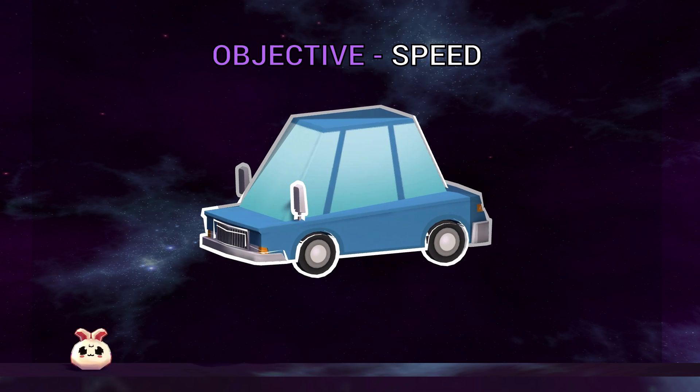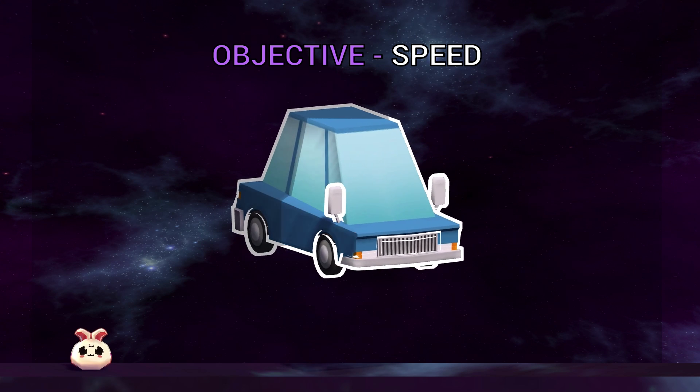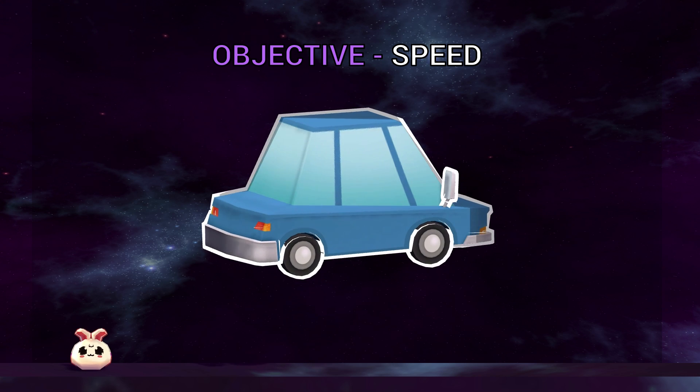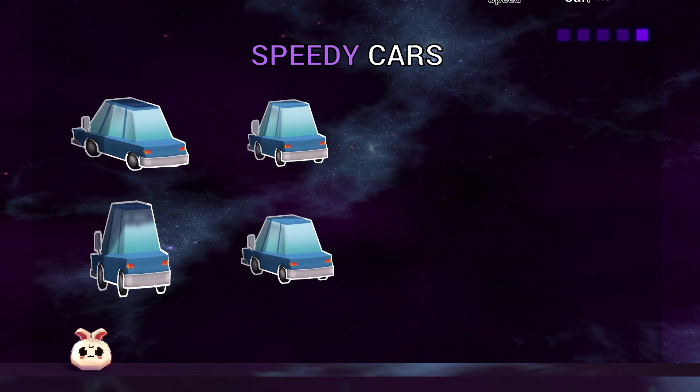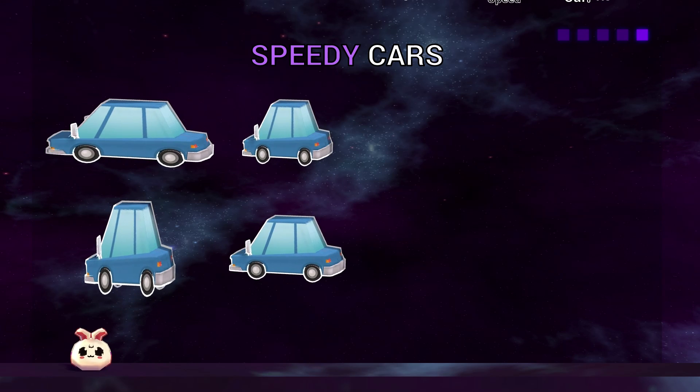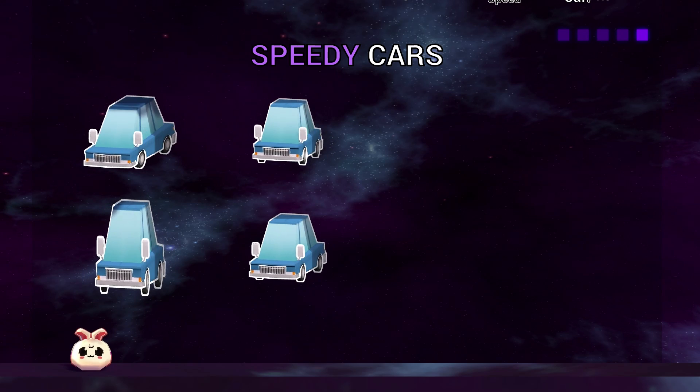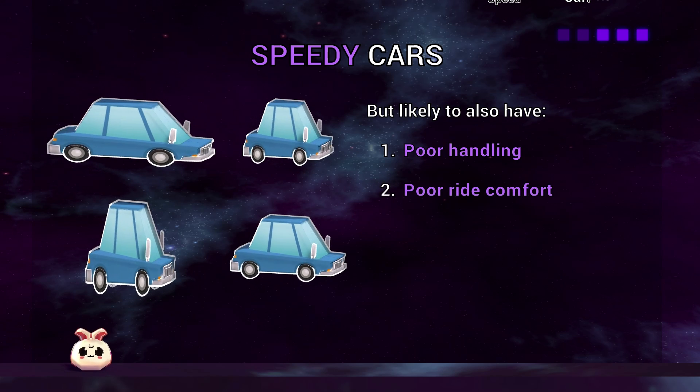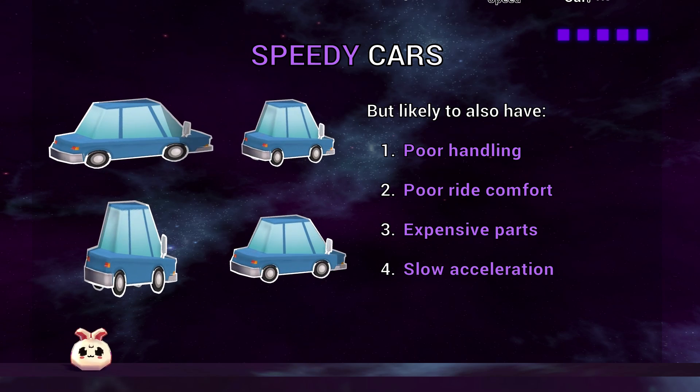Let's say we've been asked to optimize the design of a car. The competing car on the market is currently more attractive because it's faster, so we decide to optimize the car design with the single objective of improving its speed. At the end of this optimization process, we may end up with one or many solutions which are all very fast. But what have we sacrificed? Without considering other objectives during the optimization process, we have likely produced designs for cars which have poor handling, poor ride comfort, they may use parts that are very expensive, and they may have extremely slow acceleration.